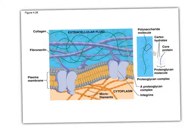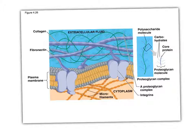A student asks: how is the extracellular matrix different from microtubules? Microtubules, intermediate filaments, and actin are all intracellular. The difference is outside versus inside. The cytoskeleton is a framework of proteins within the cell that gives the cell structure. The extracellular matrix is sugars and proteins outside of the cell that the cell can anchor to.